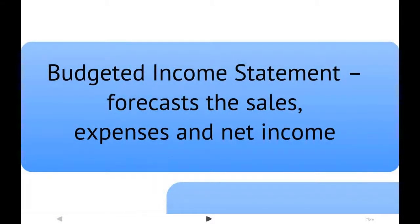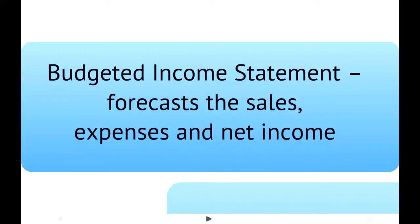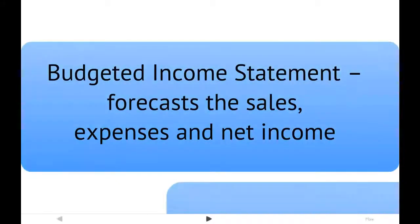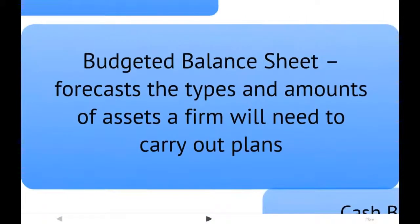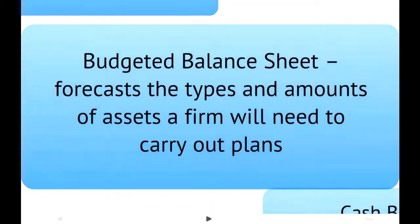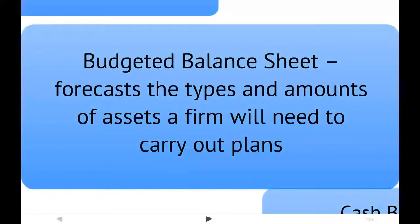The first thing produced is a budgeted income statement, where we simply forecast sales, forecast expenses, and forecast net income. The second is a budgeted balance sheet, where we forecast the different types of assets a company is going to need to carry out its plans — projecting what kind of equipment we're going to need, whether we need to acquire additional inventories, or whether we need to acquire land for building new plants. Your budgeted balance sheet plays into what type of funding you're going to try and seek.